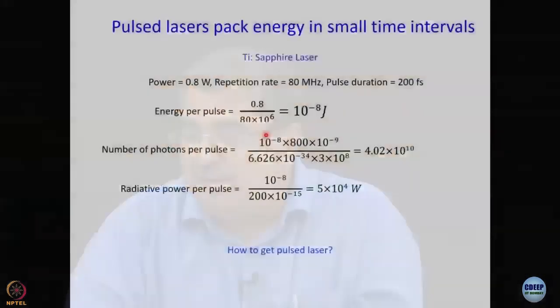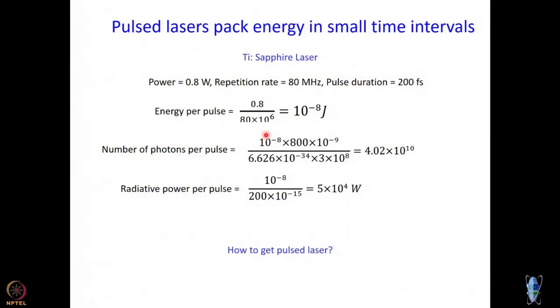It is important to understand that when you use a pulse laser, even though the light itself might not look very strong, for the time when it is on, the power is really really high. In a pulse laser we are essentially subjecting our sample to very high power for short periods of time. Now we come to the question: how do we get a pulse laser? That is what we will take in the next module, and to do that we will need to understand something called longitudinal modes.